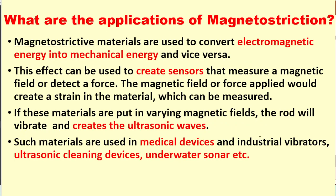What are the applications of magnetostriction? Magnetostrictive materials are used to convert electromagnetic energy into mechanical energy and vice versa. This effect can be used to create sensors that measure a magnetic field or detect a force. The magnetic field or force applied would create a strain in the material which can be measured.